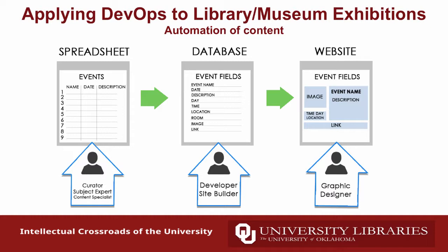This allows your curator or content specialist to start working with subject experts to gather content at the same time that your developer and database admin are structuring the database to match those fields, and at the very same time your graphic designer and front-end developer are creating a template based on those fields. All of this can happen concurrently throughout the planning process. Then a week or month before your site is ready to launch, you do a very simple content import from the spreadsheet to the database and onto the website. That's how we were able to populate Galileo's World with content so quickly.